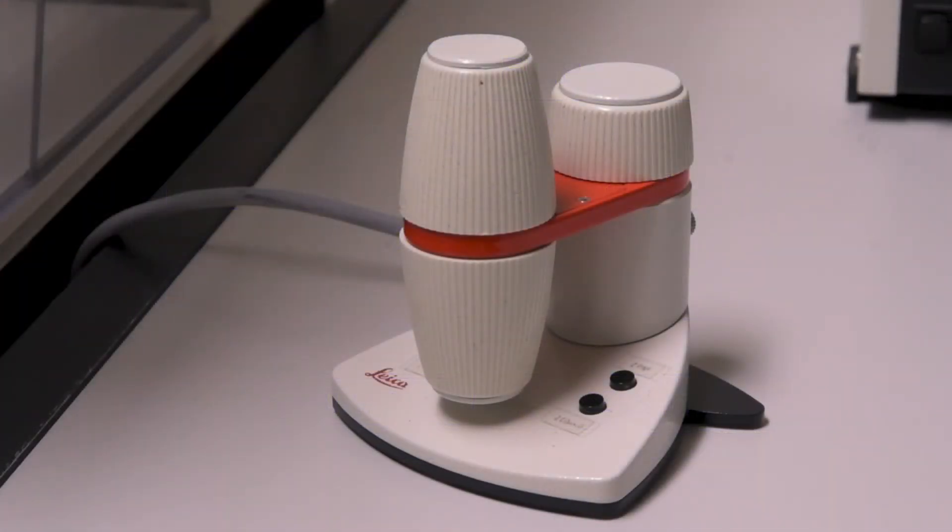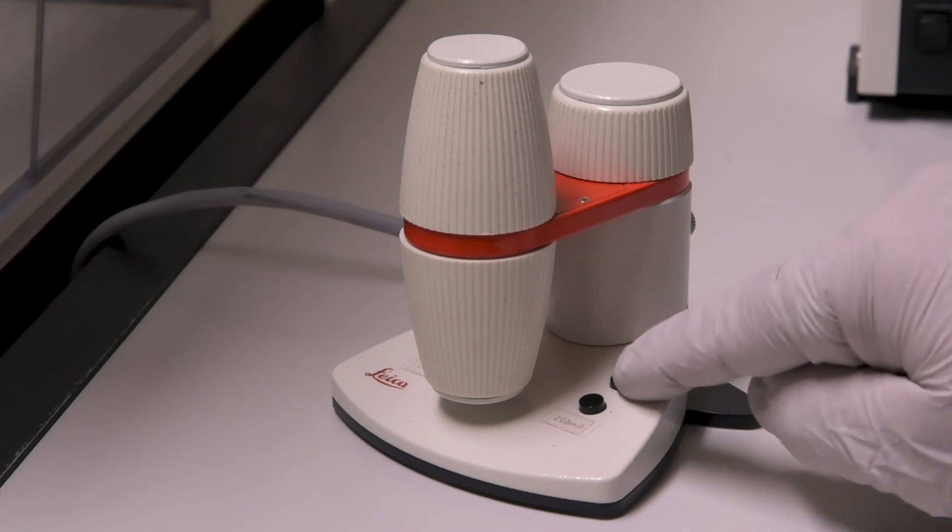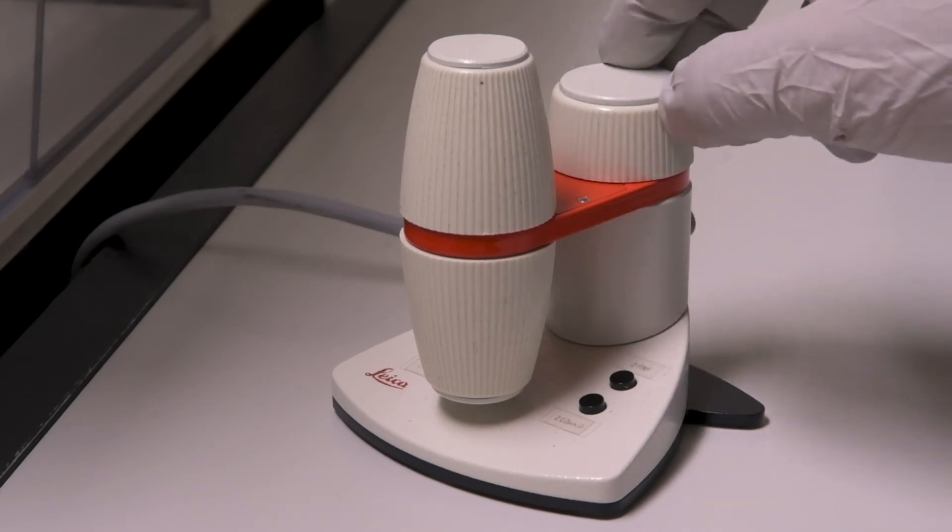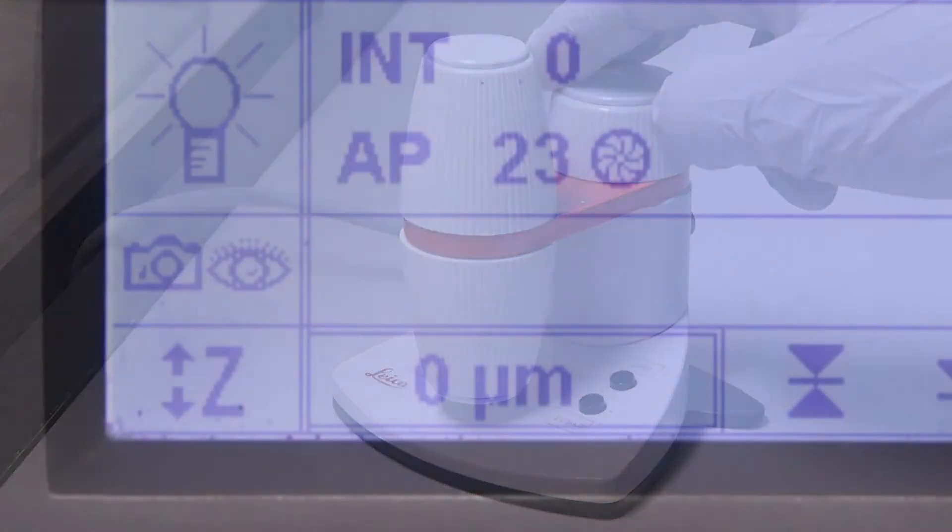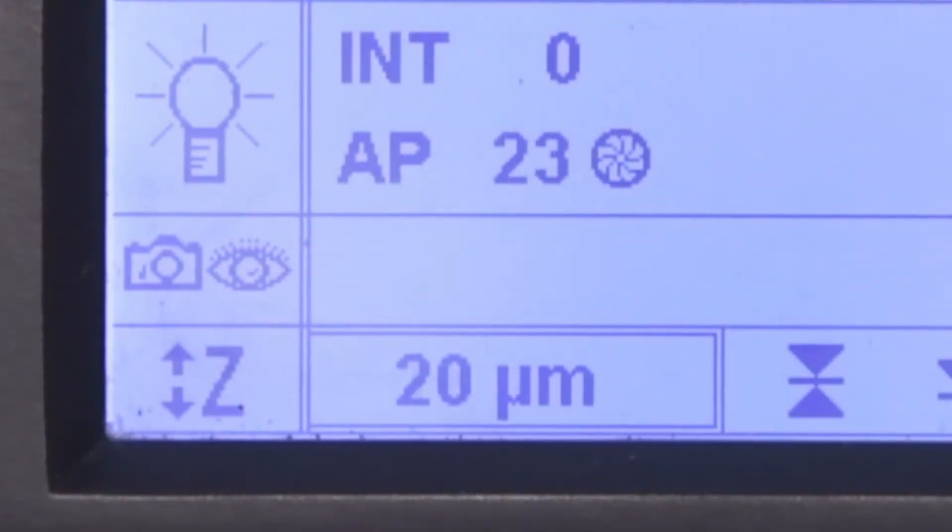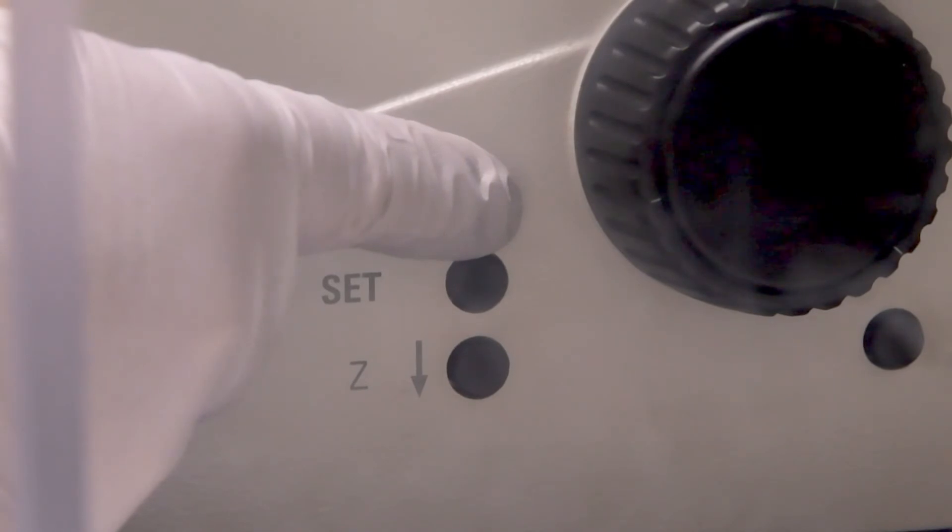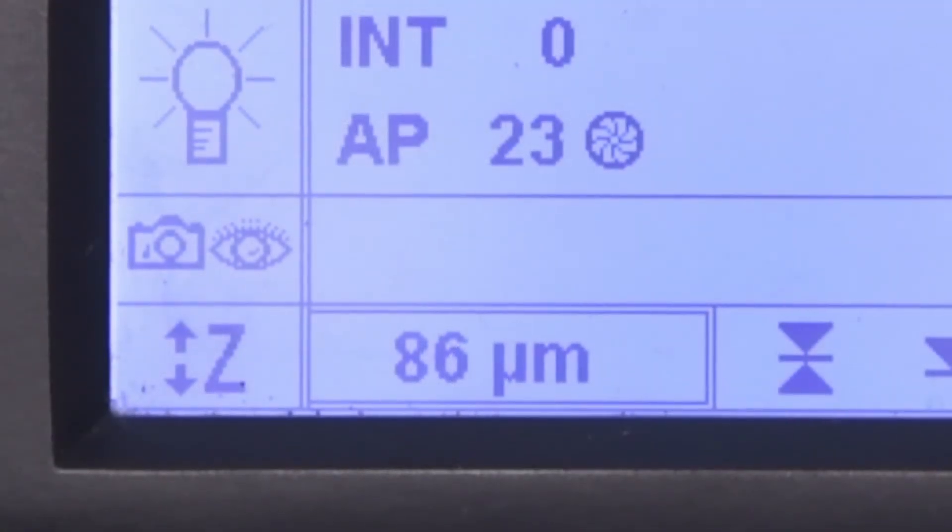At this point, the only way to raise the objective higher is by using the Z-focus knob on the salt and pepper shaker. As you go higher, up into the plus Z range, the lens will be pushing upwards. If you stop at a higher position but want to get back to the zero, all you have to do is push that top button again. Remember, it brings you back to the zero position always, whether you're above or below.